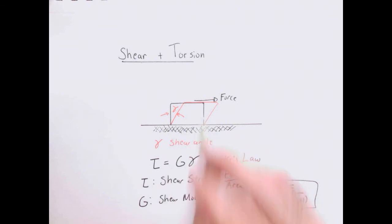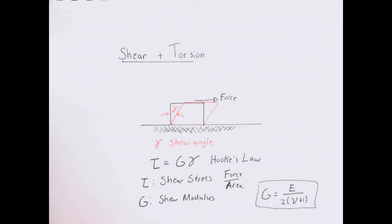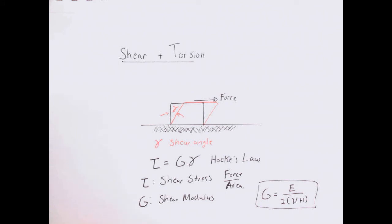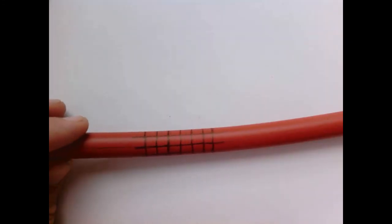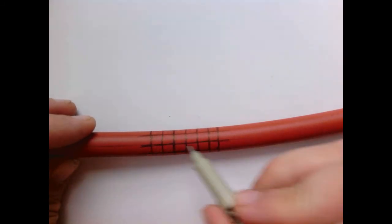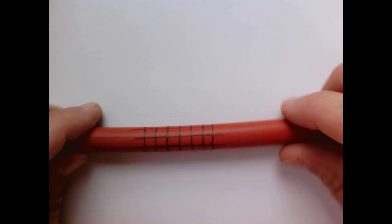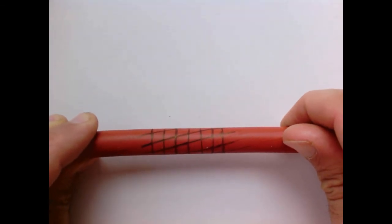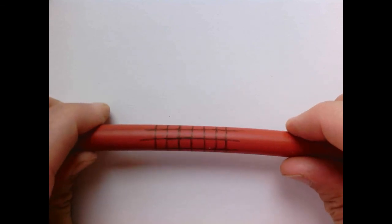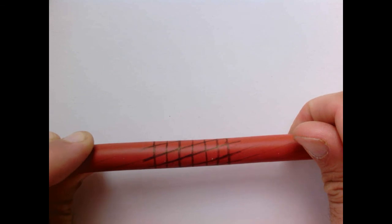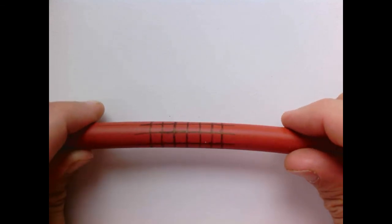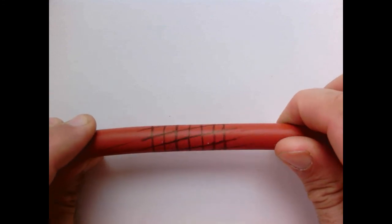When we had tension, we could check our formulas easily with a simple stretching experiment. We need an analogous simple experiment for shear. Here is our experiment: I have a rubber bar, circular in cross-section, with grid lines sketched on it — lines along the axis and looping around it, forming a rectangular grid. I'm going to twist this bar. If you carefully look at the grid lines, the elements start off as squares and end up in the same configuration we sketched for shear — the elements on the outside have that same shear deformation.